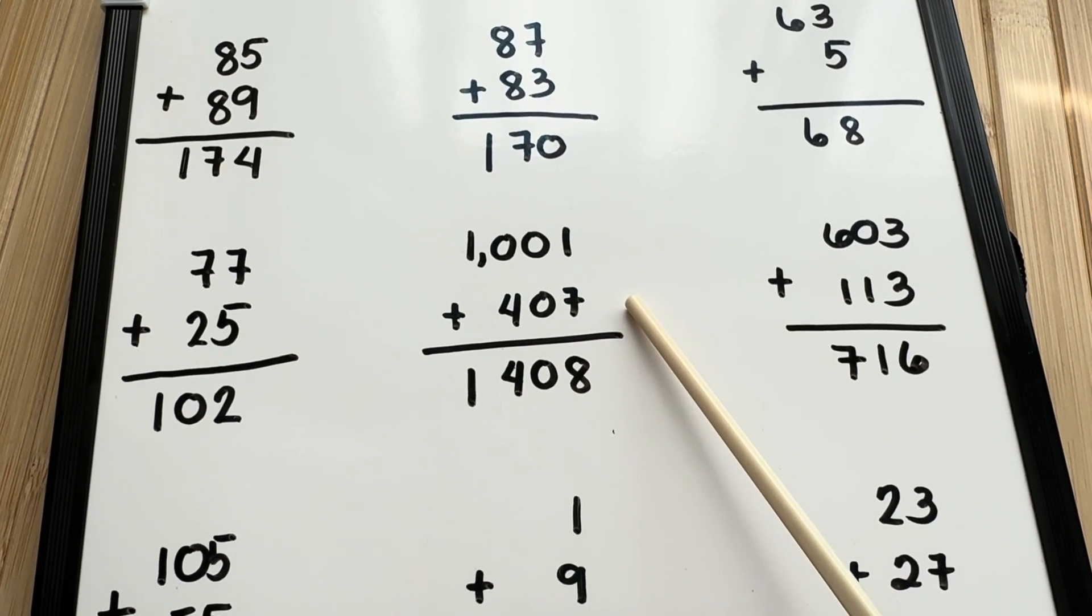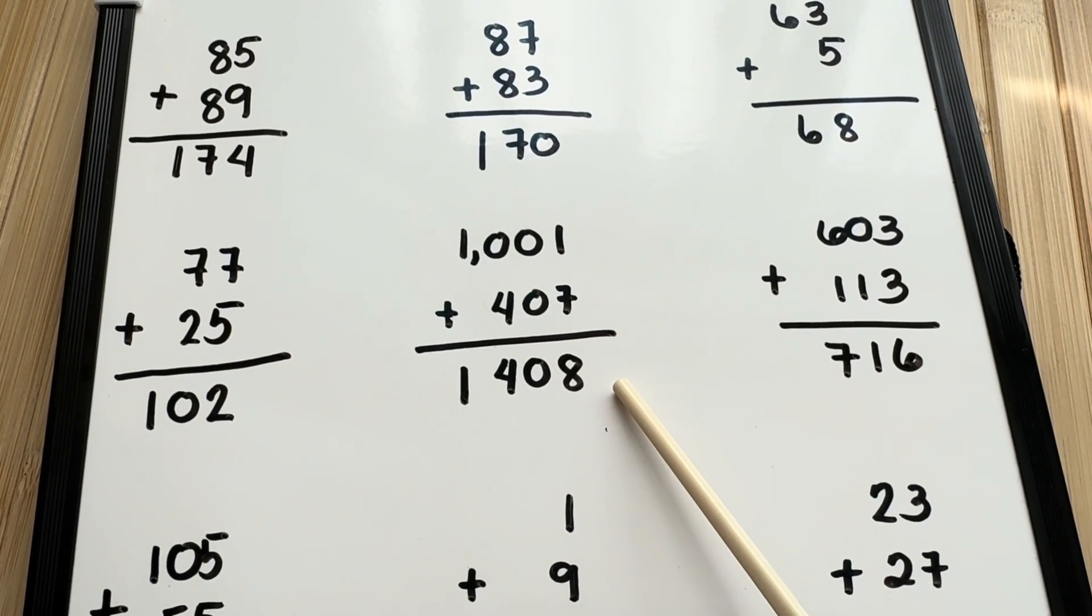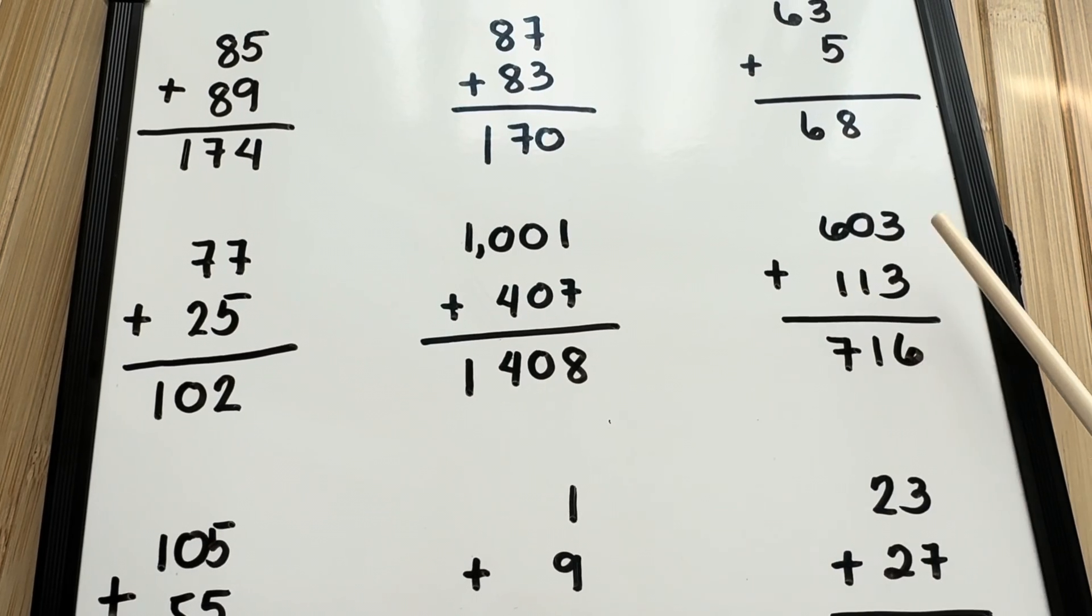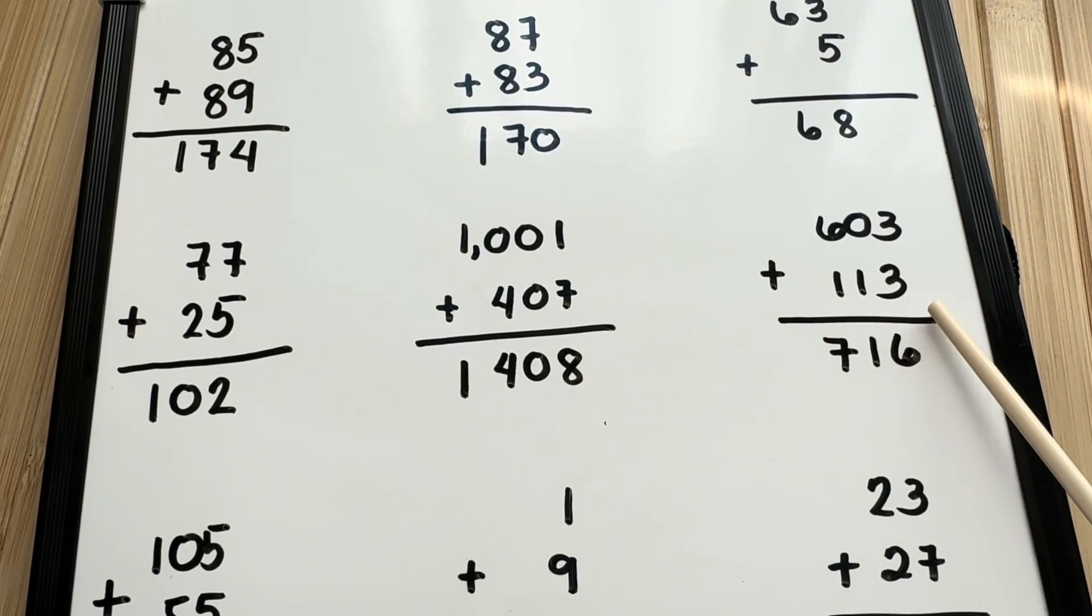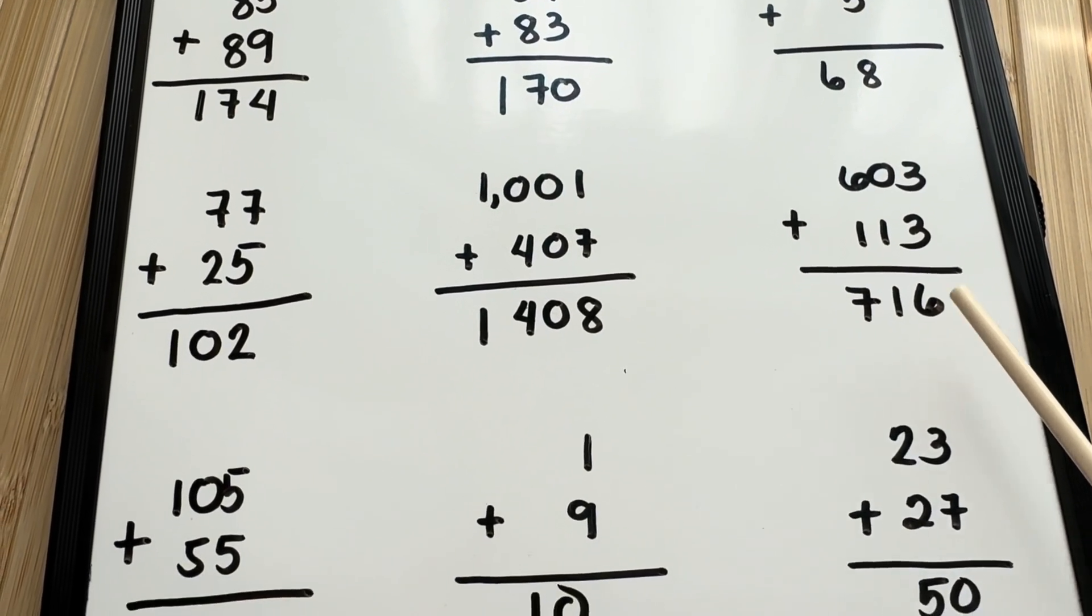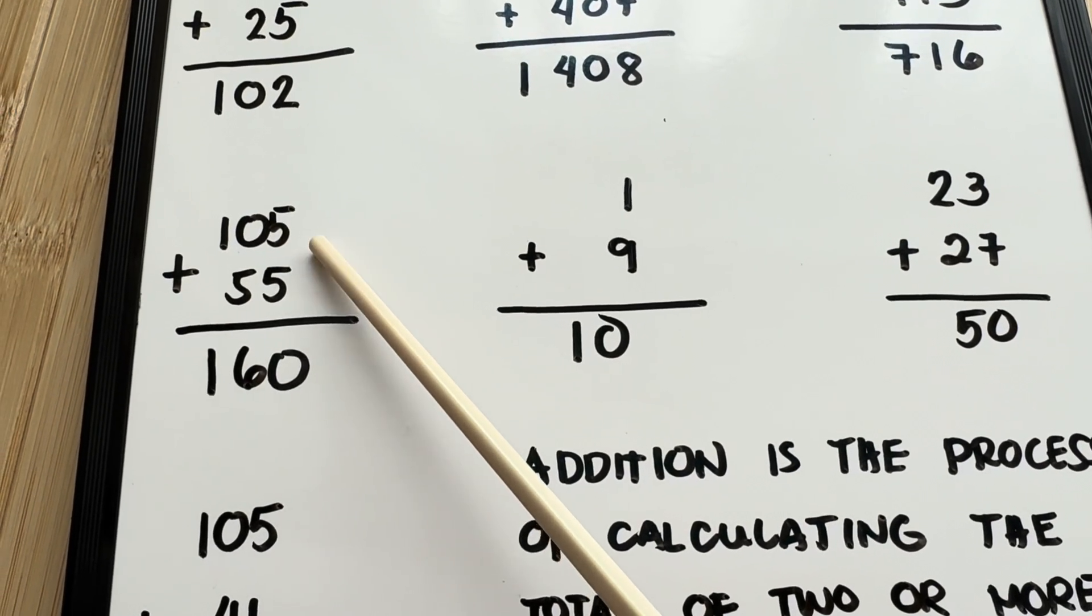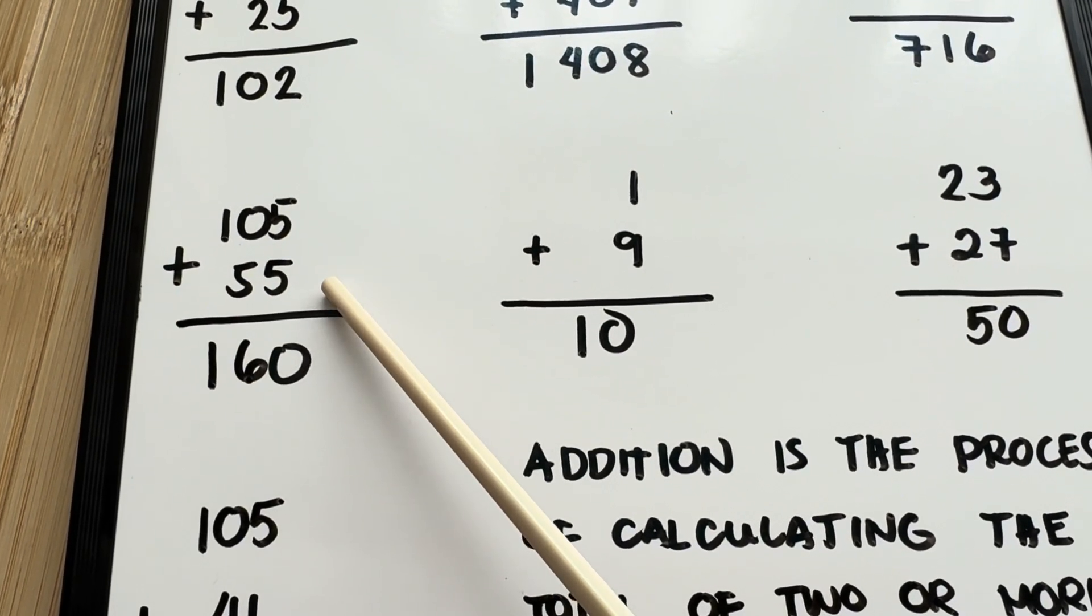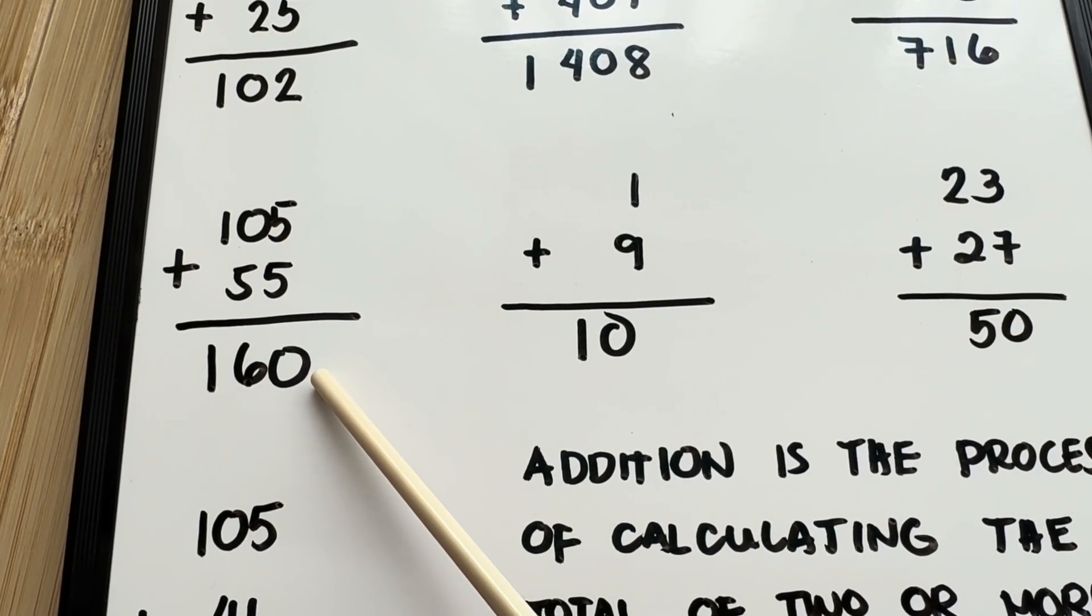1,001 plus 407 equals 1,408. 603 plus 113 equals 716. 105 plus 55 equals 160.